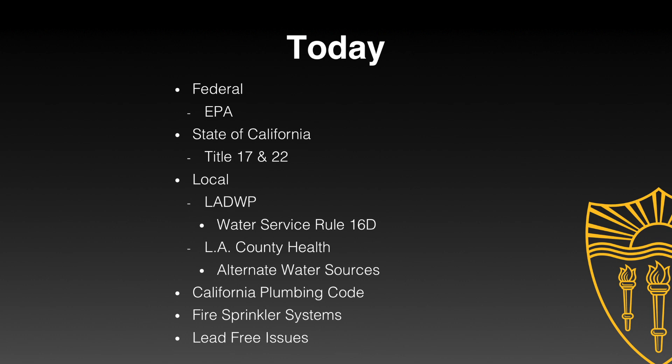Some of the topics we're going to be dealing with today, starting with some of the federal regulations — we want to make sure people understand some of the building blocks we're dealing with, why some of our local regulations may look like they do, based on what state and federal regulations have been passed over the years. We'll be talking about EPA, state of California, and some local specific issues, including a sample from the Department of Water and Power. We'll also cover LA County Health's new document on alternate water uses, California plumbing codes, fire sprinkler systems, and lead-free issues as they pertain to cross-connection control programs.